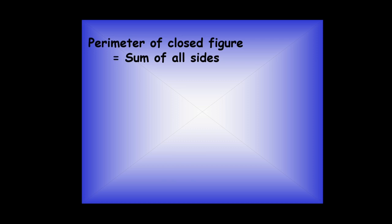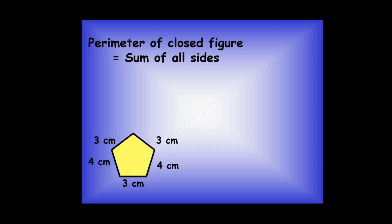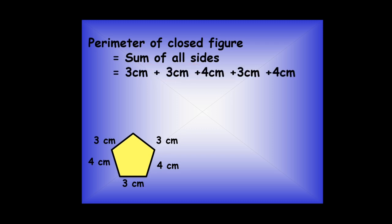Now let's talk about finding the perimeter of a few figures. To find the perimeter I have to take the sum of all the sides. Here's a figure on the screen — the perimeter is the distance along its edges. The sides are 3 cm, 3 cm, 4 cm, 3 cm, and 4 cm. Adding them gives 17 centimeters as the perimeter of this figure.